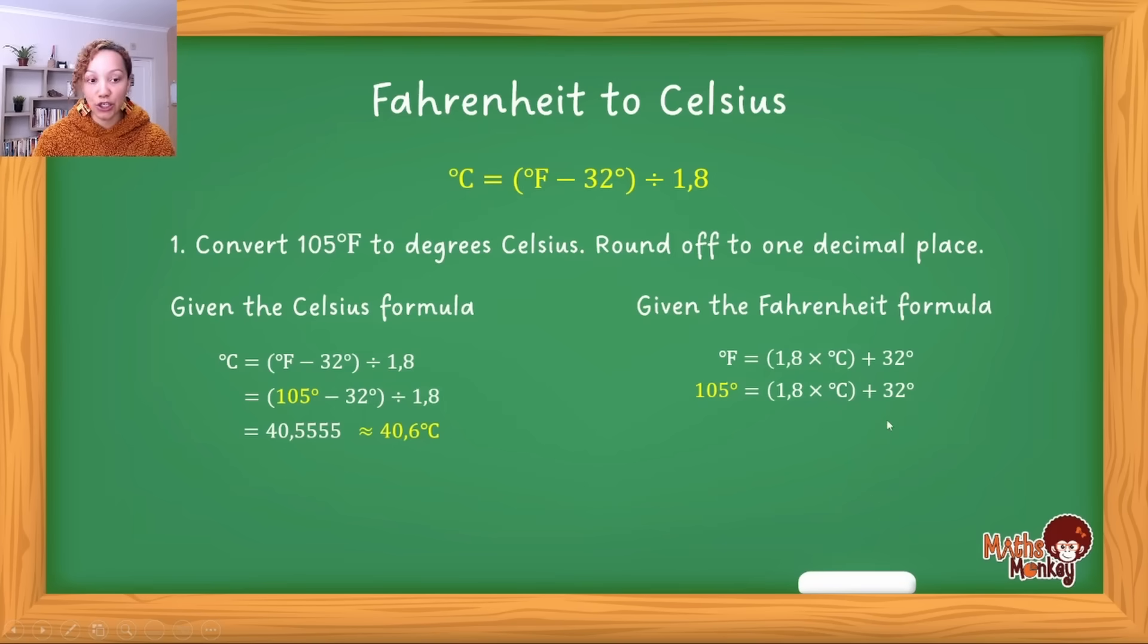We want to get Celsius alone, but first we'll move the 32 over, because we move what's attached to Celsius last. Whenever you move something over, the sign changes. This is plus 32 on this side, so when I take it over it becomes minus 32. On the left-hand side I end up with 73, because 105 - 32 = 73.